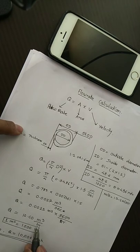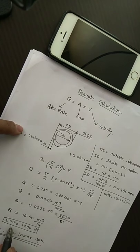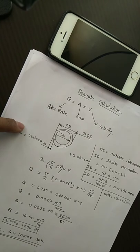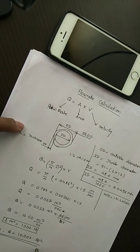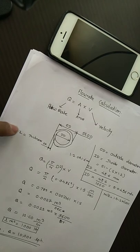It is in m³/hr. If you want to convert it into liters per hour, we have the formula: 1 m³ of volume = 1000 liters. Simply multiply 10 with 1000, and you will get volumetric flow rate = 10,000 liters per hour. Thank you.